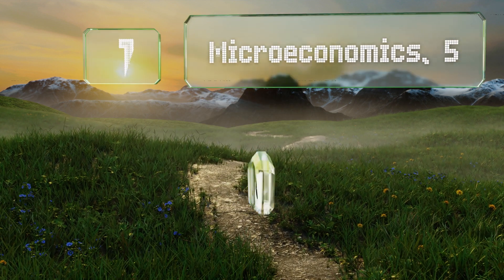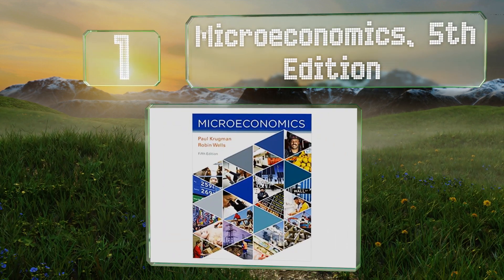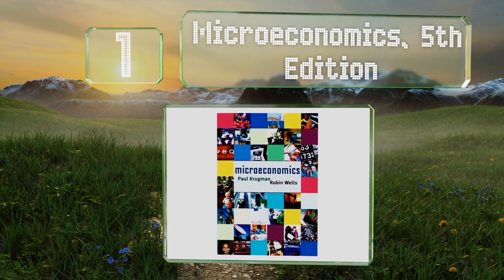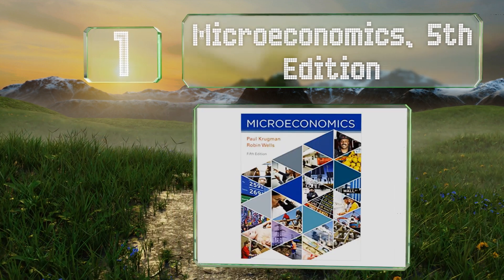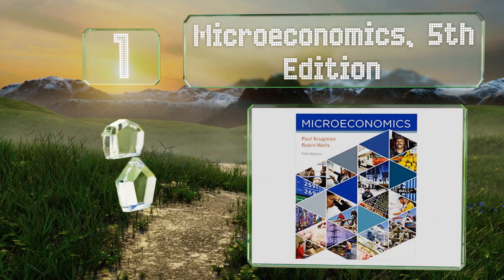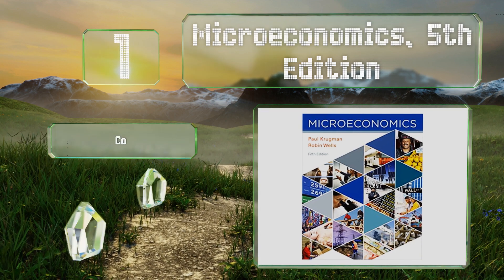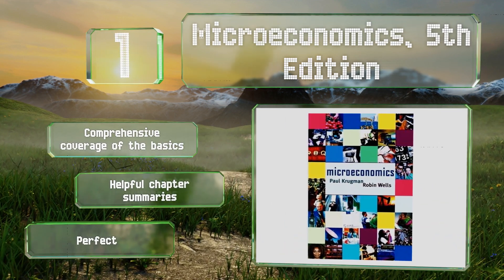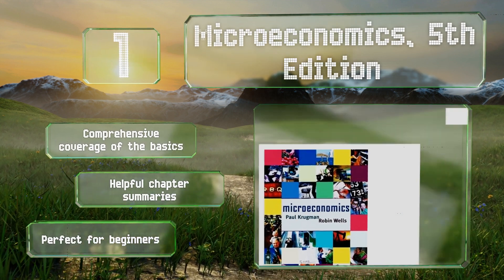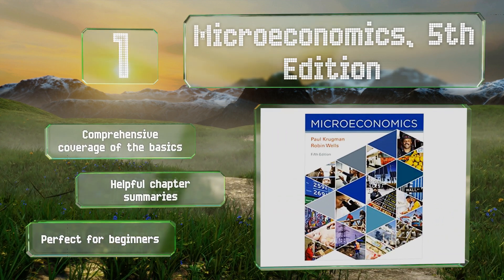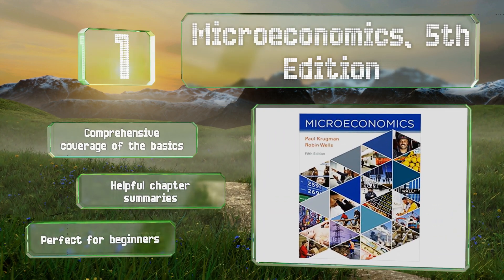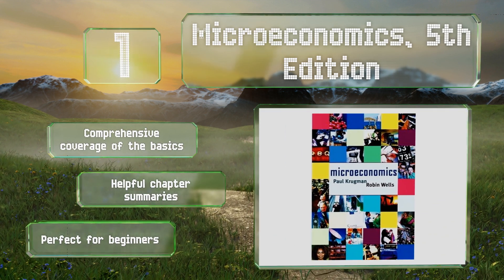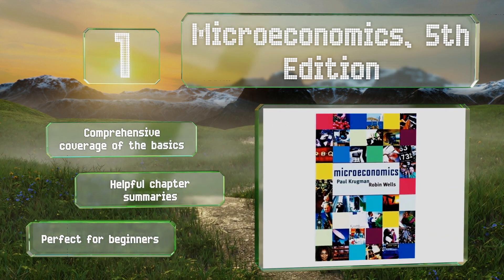Coming in at number one on our list, penned by Nobel Prize-winning author Paul Krugman and Robin Wells, Microeconomics Fifth Edition introduces students to the intricacies of the discipline with flowing and accessible prose. It's full of compelling stories, clear examples, and real-world case studies. It provides comprehensive coverage of the basics and helpful chapter summaries. It's perfect for beginners.